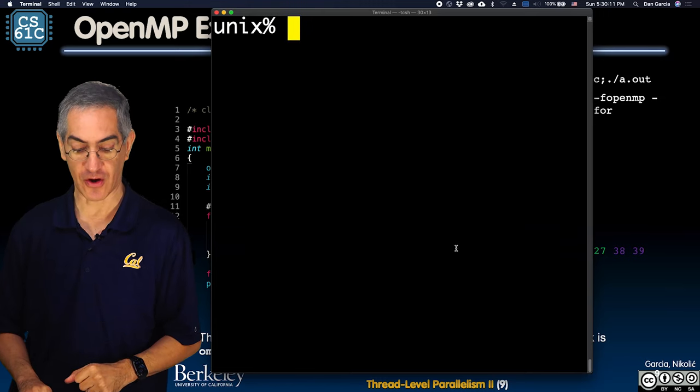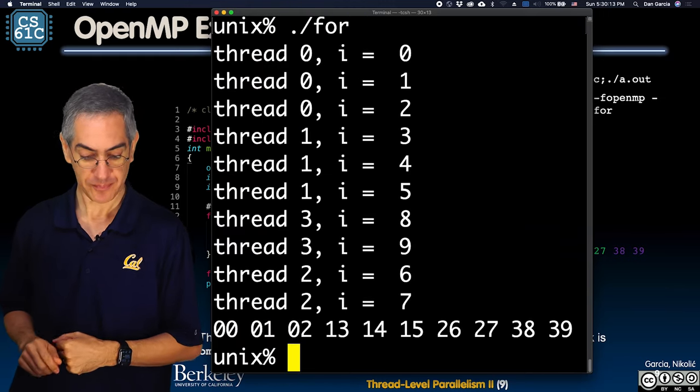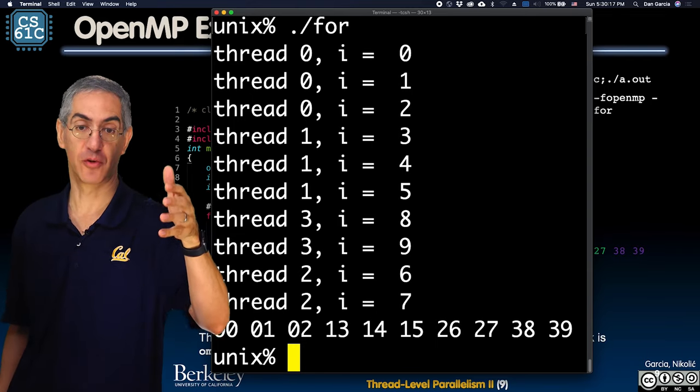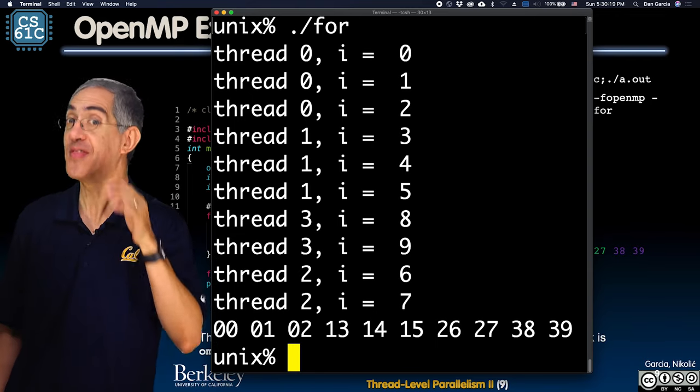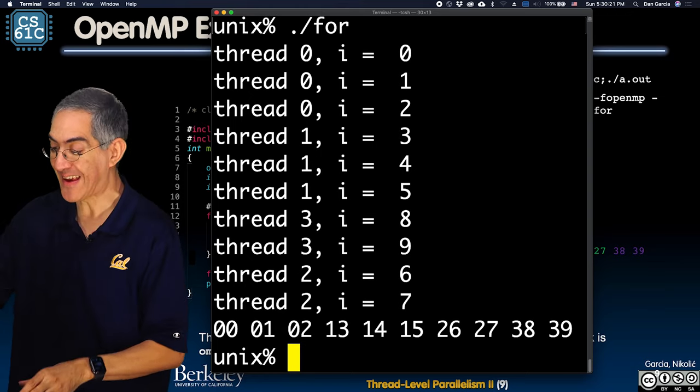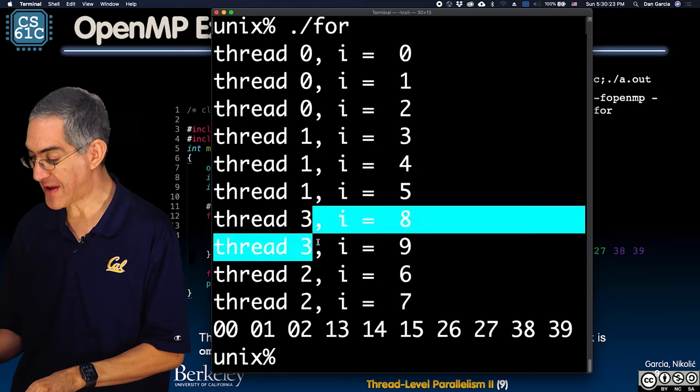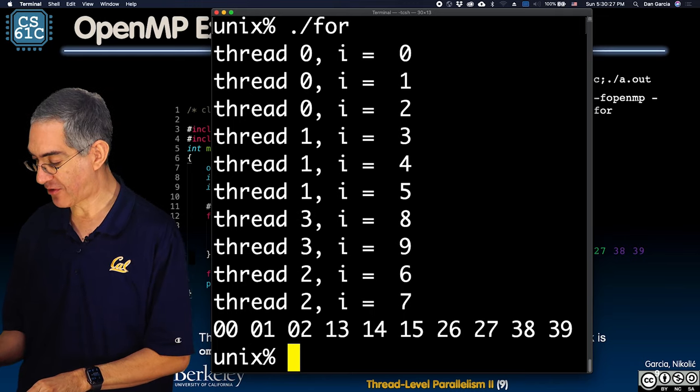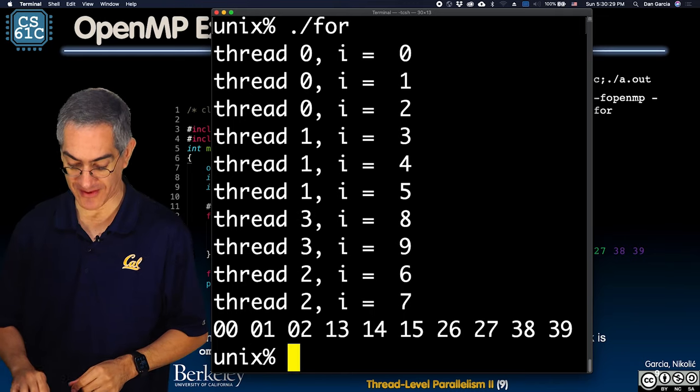Now let's run it twice. I'm gonna run this code now. Oh look how nice it is - all the zeros hit first, then all the ones, then the threes came in, and then the twos. Now let's run it one more time.